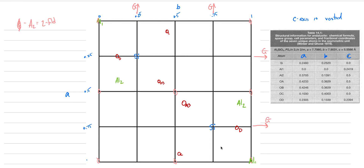Now the next thing we should do is start using our glide planes. This silicon is not sitting exactly at 0.25 — it's a little off. If we move it along the glide, glides tend to be T/2, so we're going to move by 0.5 blocks. The next silicon is here, and the next silicon is here. Let's make sure it works with this glide — sure it does. We go down and translate, and there it is.